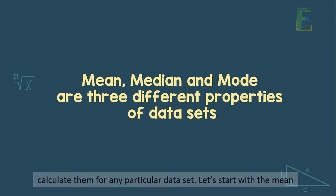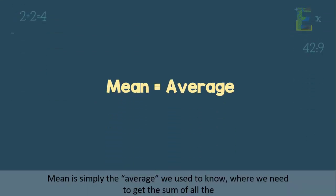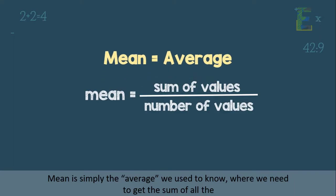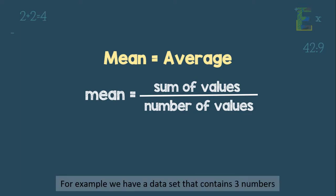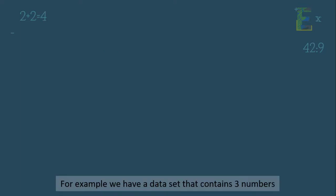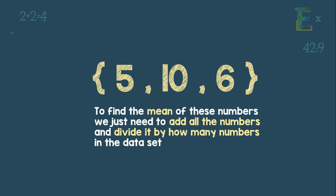Let's start with the mean. Mean is simply the average. It's the average we used to know, where we need to get the sum of all the values divided by the number of values. For example, we have a data set that contains three numbers: 5, 10, 6.